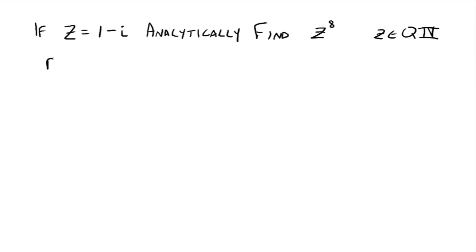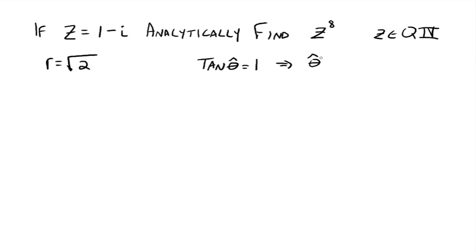What's R? R is equal to the square root of one plus one, so R equals the square root of two. Since we're in quadrant four, I'm going to use the reference angle idea. So the tangent of theta-hat, making everything positive — one over one — is just one, giving us an angle in the first quadrant. So theta-hat is pi over four. Since we want our angle in quadrant four, that implies theta equals seven pi over four.